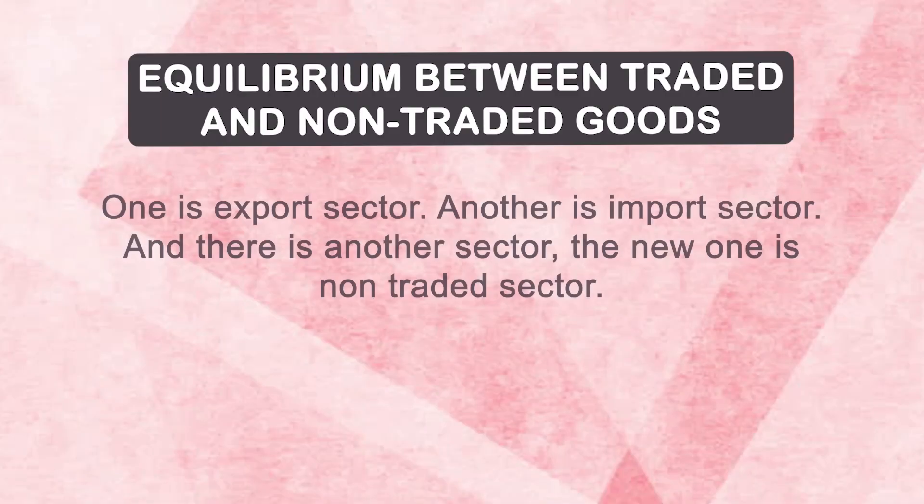So a small country has to accept whatever happens in the international market and the prevailing commodity price. There are three sectors — unlike the specific factor model and Ricardian model, we are adding one more sector: one is the export sector, another is the import sector, and there is a new one — the non-traded sector.